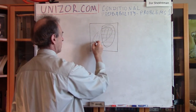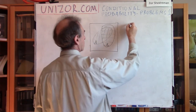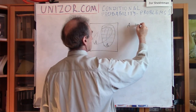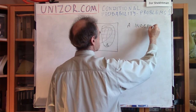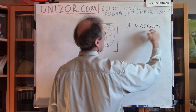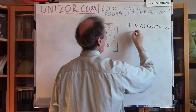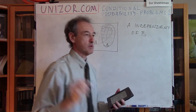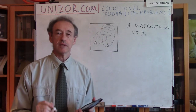Let's call them A and B, and I am talking about A being independent of B. So we are talking about two independent events.